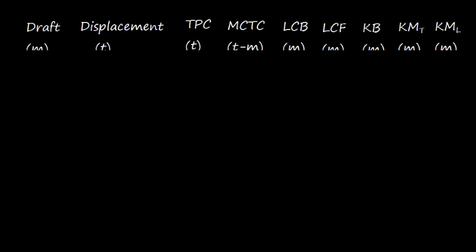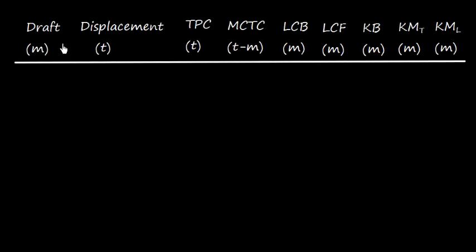This is very important because all the hydrostatic particulars like displacement, TPC (tons per centimeter), MCTC (moment to change trim by one centimeter), LCB (longitudinal center of buoyancy), LCF (longitudinal center of flotation), KB (center of buoyancy from keel), KM (transverse metacenter), and KML (longitudinal metacenter).